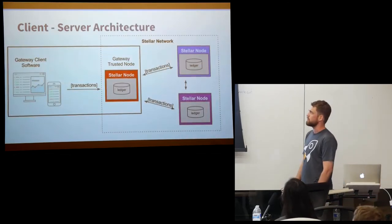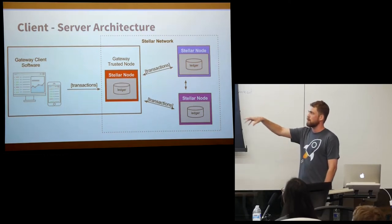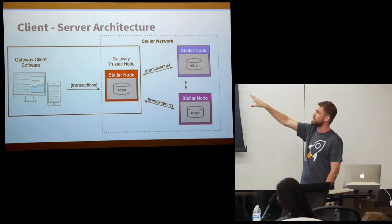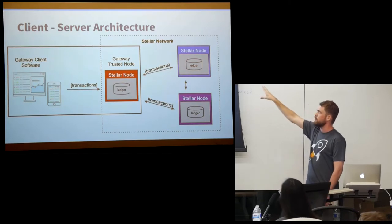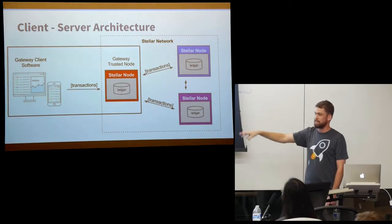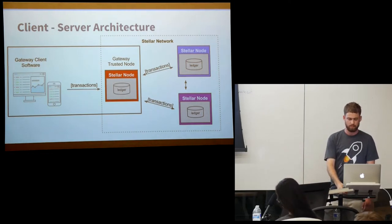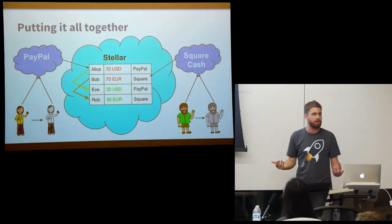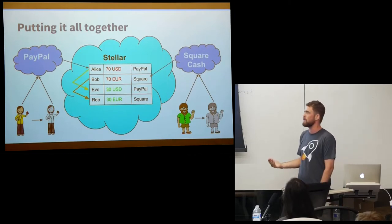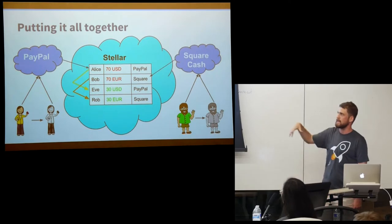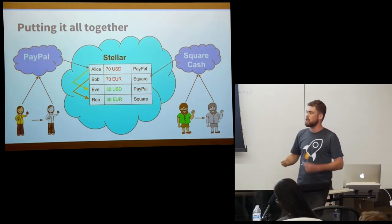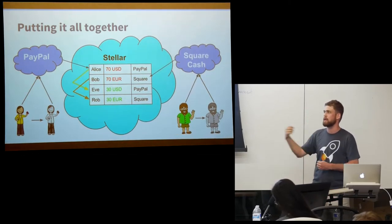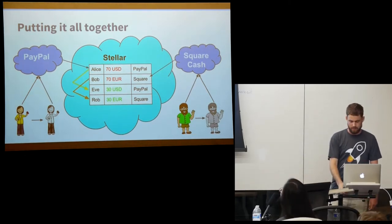Here's an overview of the architecture: the user interacts with gateway client software on desktop or mobile, creating a transaction which is forwarded to that client software's trusted node. The trusted node forwards it to the rest of the network where it's applied, on average in about five seconds. So now Alice can send any other Stellar account her PayPal USD balance. But what we really wanted was interconnectivity between PayPal and Square Cash — people using their own local currencies to send to someone using a different currency. That's where the distributed exchange comes in.